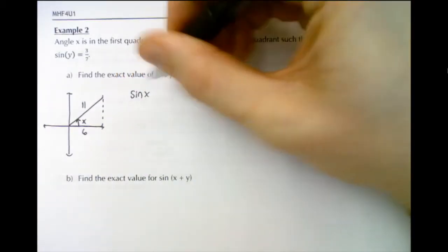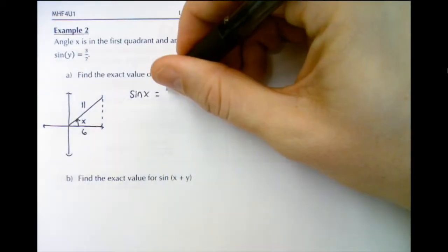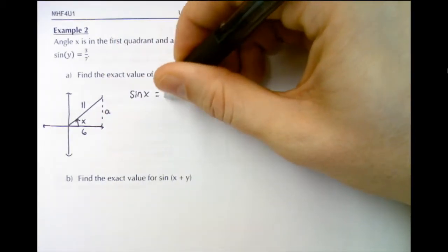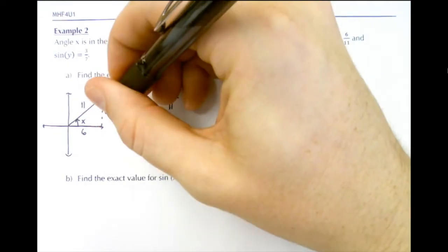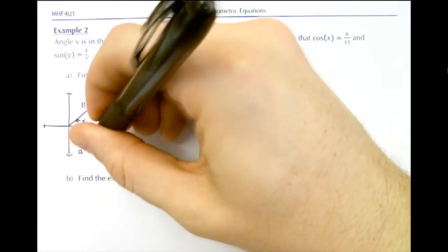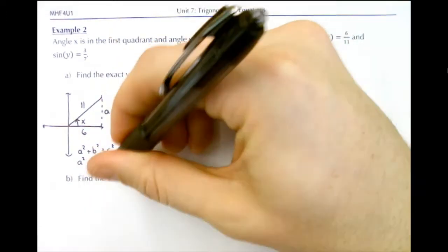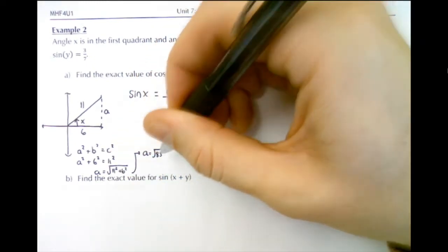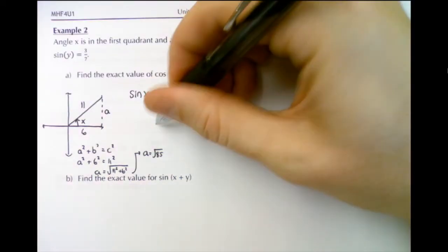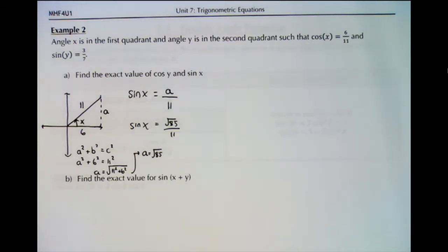To find the exact value of sine x, which we don't know, we need the opposite side over hypotenuse. We can find the opposite side using the Pythagorean theorem: a squared plus b squared equals c squared. So a squared plus 6 squared equals 11 squared, which gives a equals the square root of 11 squared minus 6 squared, which is the square root of 85. So a is root 85.